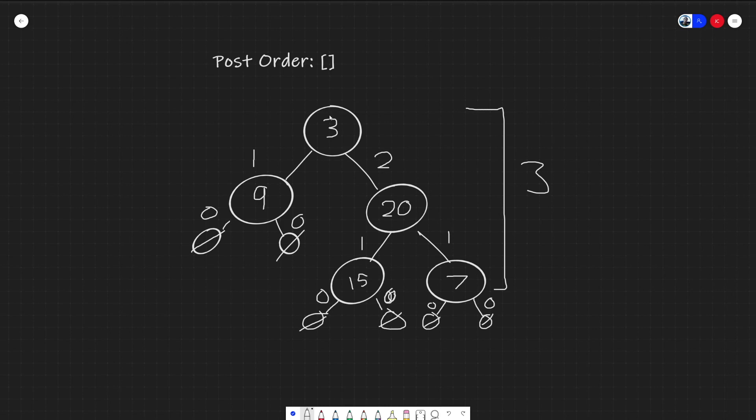And then, three will now compare its left child, which has a height of one, and its right child, which has a height of two. And then, it would take two, because two is the greatest value. And it would add one to it, and it would return three, which would give us the height.